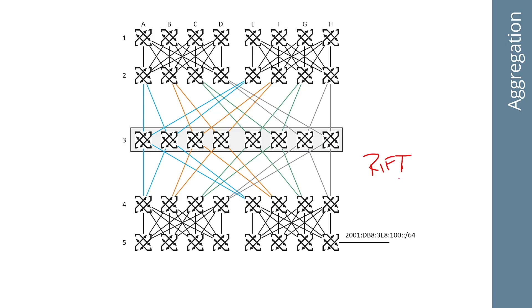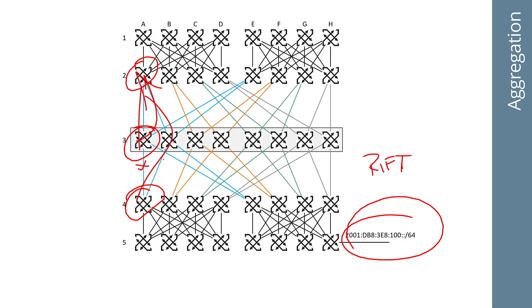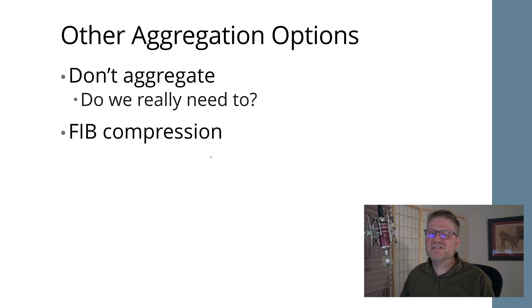One solution is auto-disaggregation, which is what the protocol RIFT implements. If this link fails, A2 will notice that A3 no longer has the same set of neighbors — it's lost connectivity to A4. So A2 will tell A3 to send all the routes, or at least the routes only reachable via that broken link. This auto-disaggregation was implemented in EIGRP but never actually shipped, and it is implemented in the RIFT protocol.